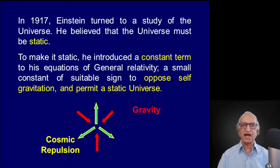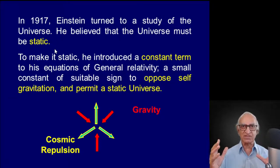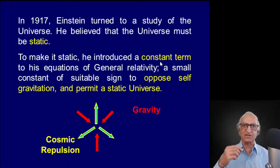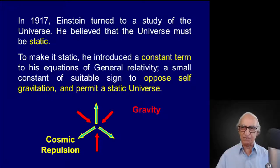In 1917, Einstein, like most people, believed that the universe must be static. Certainly there was no observational evidence otherwise. If the universe had just mass and those masses interacted due to mutual gravity, then surely the universe must contract due to self-gravity. Since this wasn't observed, Einstein tried to create a static universe by introducing, in a very artificial manner, a constant term lambda of a suitable sign, such that it would produce repulsive gravity and therefore balance the attraction due to gravity, giving a static universe.